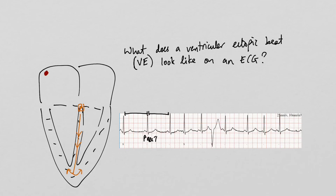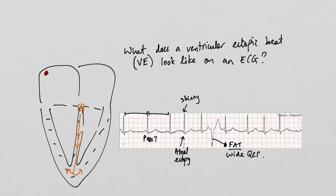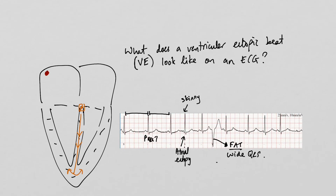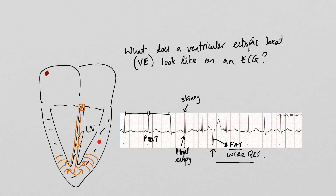We can see both atrial and ventricular ectopics here. The atrial ectopic beat is recognizable because its QRS complex is skinny. But look at this one — this looks very different. This is a fat beat, called a wide QRS complex. So why is this beat fat? If we have a ventricular ectopic beat originating from the left ventricular chamber, instead of activity coming down the naturally swift activation profile through specialized conducting tissue — which rapidly causes both sides of the ventricle to depolarize at the same time — something different occurs.